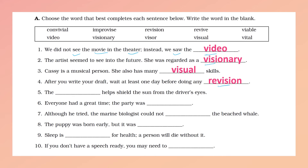Number five: '... helps shield the sun from the driver's eyes.' I think this one is easy — visor. The visor. Number six: 'Everyone had a great time. The party was...' The party was what? Convivial. Convivial.